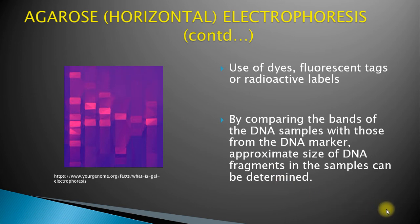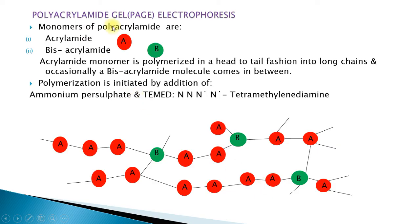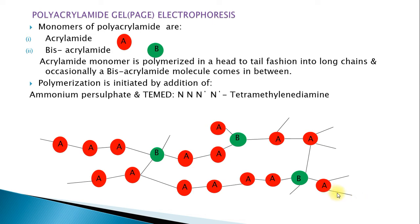The next type is polyacrylamide gel electrophoresis, also called PAGE. The polymer is polyacrylamide, with monomers acrylamide and bisacrylamide (bis). Acrylamide polymerizes in a head-to-tail fashion, with bis molecules cross-linking the chains. Polymerization is initiated by the addition of ammonium persulfate and TEMED (N,N,N',N'-tetramethylethylenediamine). This polymerization is an example of free radical catalysis.